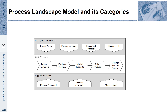Here you see an example of a process landscape model for a very specific company. This landscape model typically distinguishes different categories of processes: management processes, core processes, and support processes.